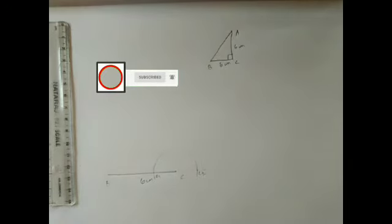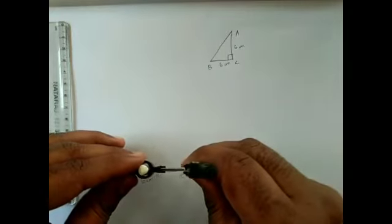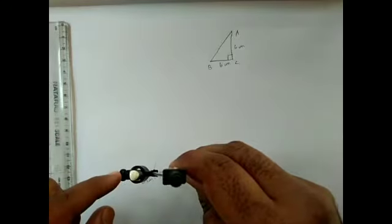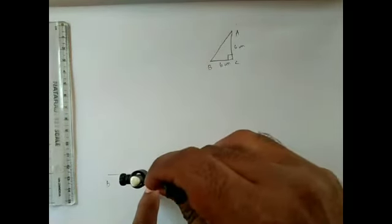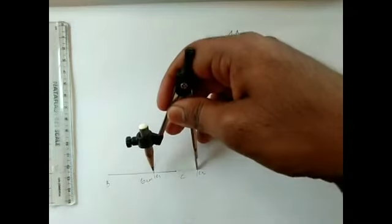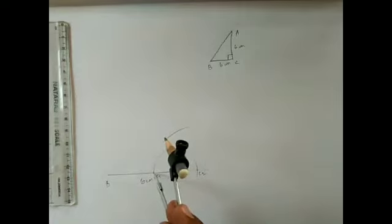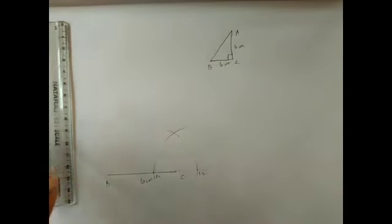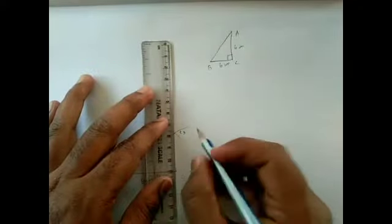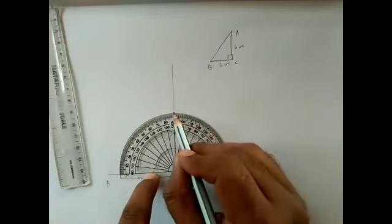Now measure the distance C1 to C2 using the compass — pointer on one point and pencil on the other. With this same measurement and with C1 as center and C2 as center, draw two arcs above the point C. The intersection of these two arcs is labeled C3. Join C and C3 — you will get exactly 90 degrees, which you can verify with the protractor.